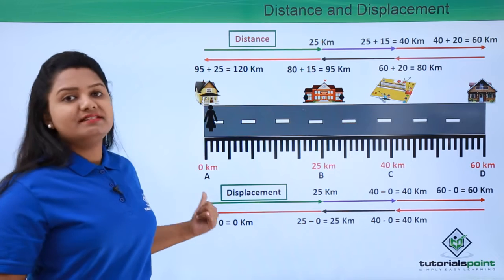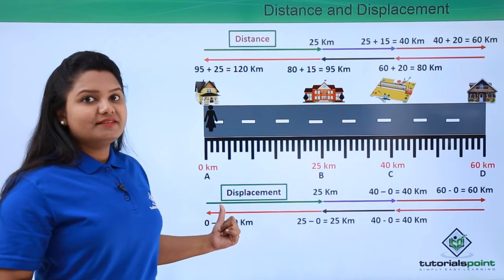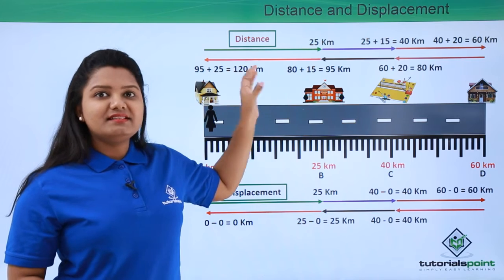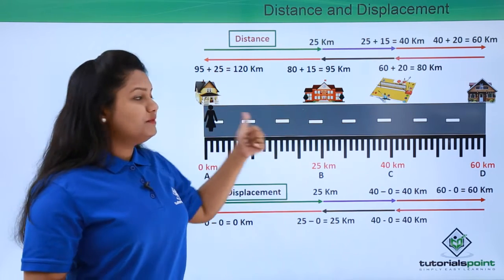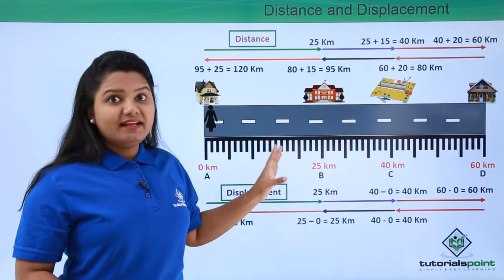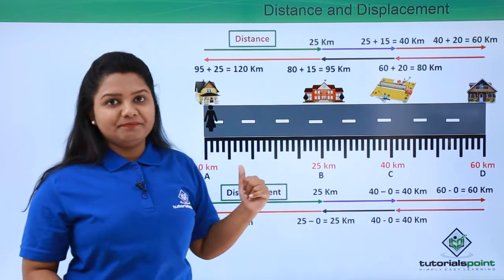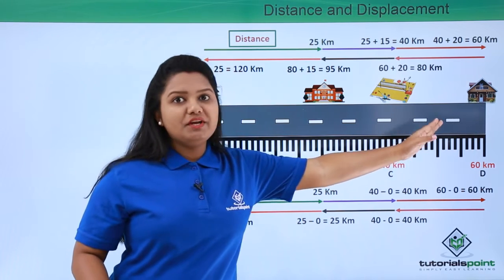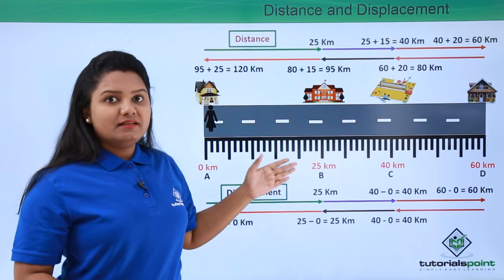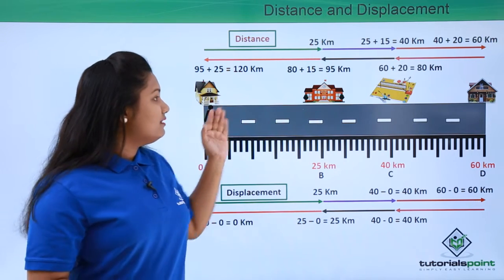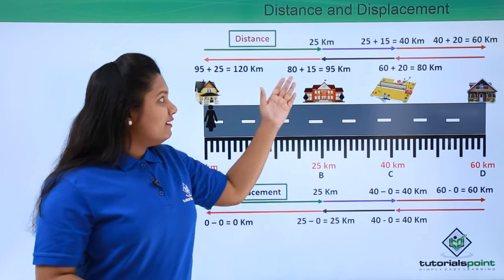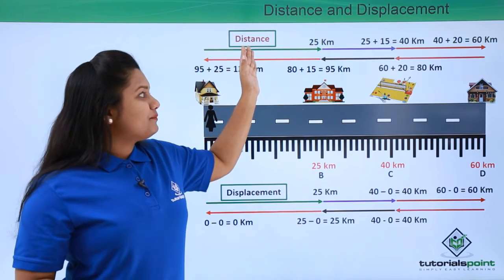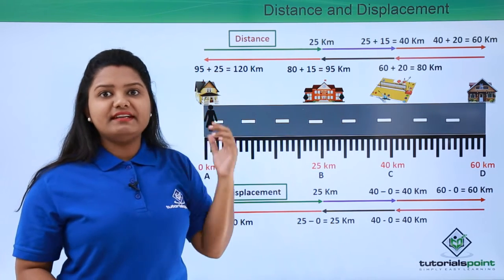So displacement here is 0 kilometers. We can figure out that the value of distance doesn't depend upon the direction of the moving object, but the displacement value does depend upon direction. As long as the direction of the object was the same — up to reaching point D — there was no difference between distance and displacement values. But when the body changes its direction, a difference between distance and displacement appears.